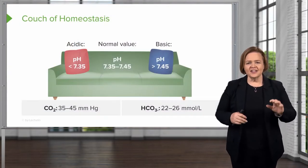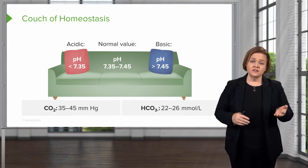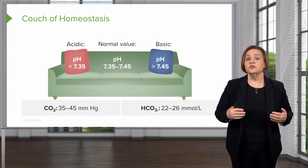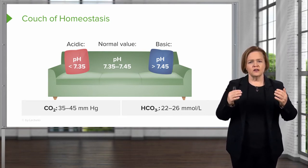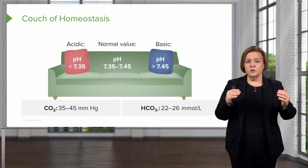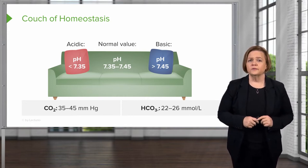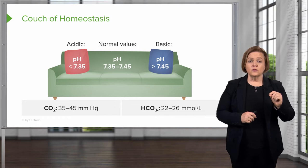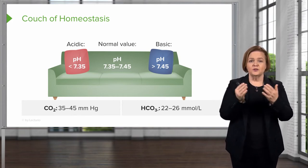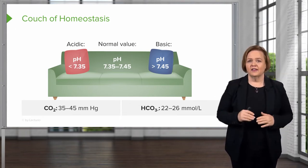We're going to take that picture of the person on the couch, just kick back and relax, and apply it to ABGs. I call this the couch of homeostasis — think about it as where your body is most comfortable and most efficient. On the couch, we're going to think of that as a normal pH of 7.35 to 7.45. So in between 7.35 and 7.45 is a normal pH. That's the first value I want you to write down: pH, normal value 7.35 to 7.45. The couch represents that space between 7.35 and 7.45.